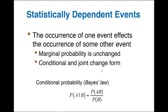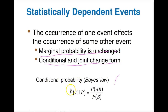Now we want to talk about conditional probability in terms of Bayes' theorem, or Bayes' law. We know that the occurrence of one event affects the occurrence of some other event — that's what we talk about with dependent events. The marginal probability is unchanged, but the conditional and joint probabilities actually change, and that's what Bayes' theorem talks about. In short, when we take the probability of some event happening given another has happened first, that's the quotient of the probability of both A and B happening divided by the probability of B just happening on its own.